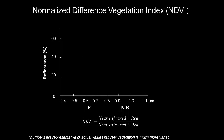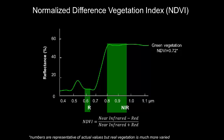The most well-known index is the Normalized Difference Vegetation Index, NDVI, that was developed to detect live green canopies in multi-spectral remote sensing data. The NDVI is calculated from the visible and the near-infrared light affected by vegetation. Healthy vegetation will have high values of NDVI since it absorbs most of the visible light that hits it and reflects a large portion of the near-infrared light.